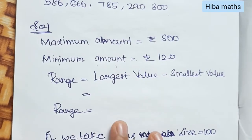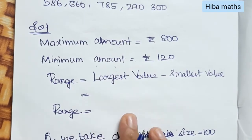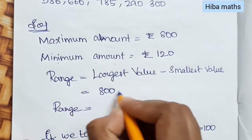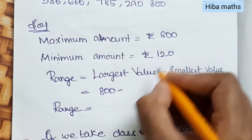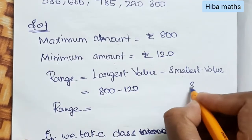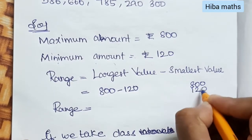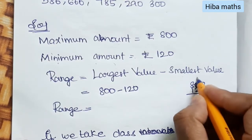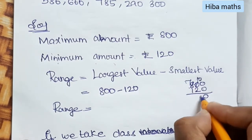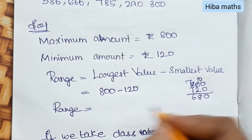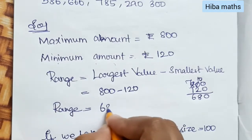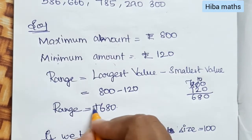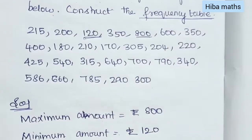Now, the range is the largest value minus the smallest value. The largest value is 800 and the smallest value is 120. So, 800 minus 120 equals 680. The range is 680 rupees.